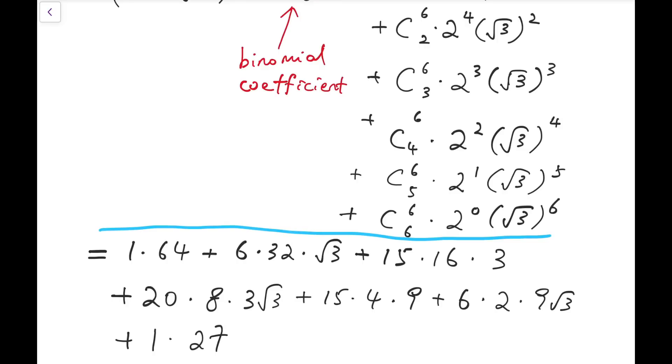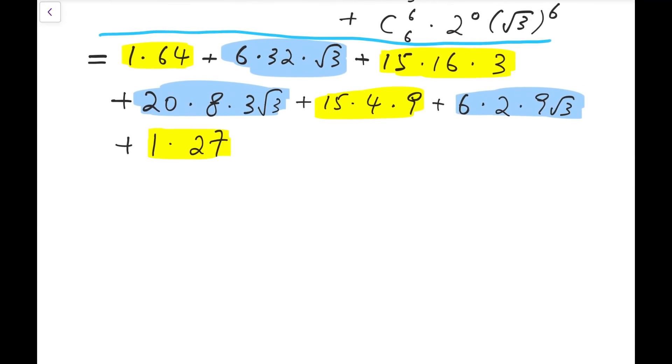So we have lots of numbers here and many terms. In fact, we have seven terms. Actually, they can be divided into two groups. These numbers can form a group because they do not contain square root of 3, while these numbers can form the second group because they all contain square root of 3. So for the yellow group, we will have 64 plus 720 plus 540 plus 27. This is the yellow group. While for the blue group, we will have 192 plus 480 plus, the last term is 108, all multiplied by root 3. And that's the blue group.